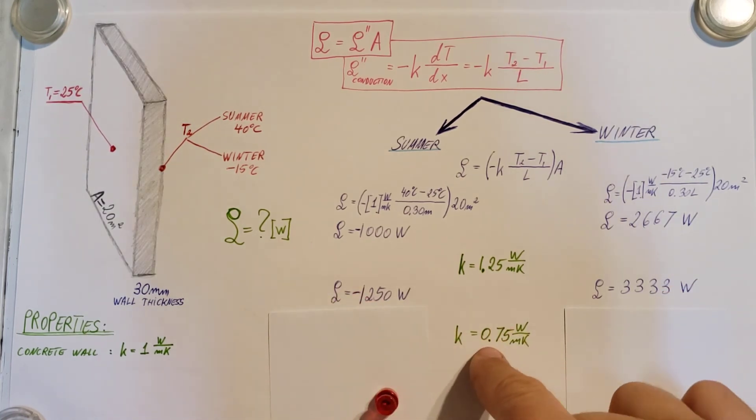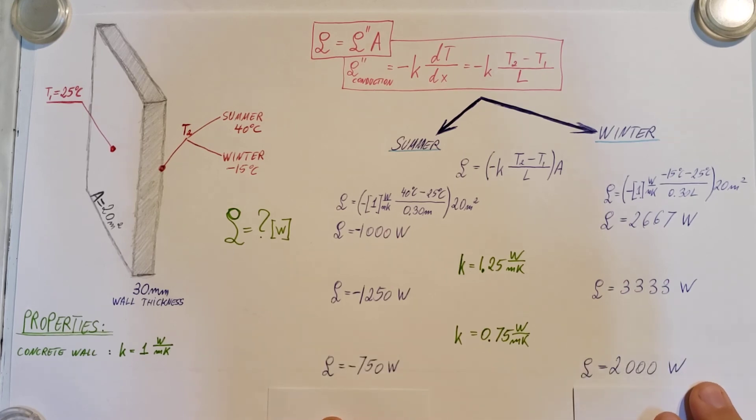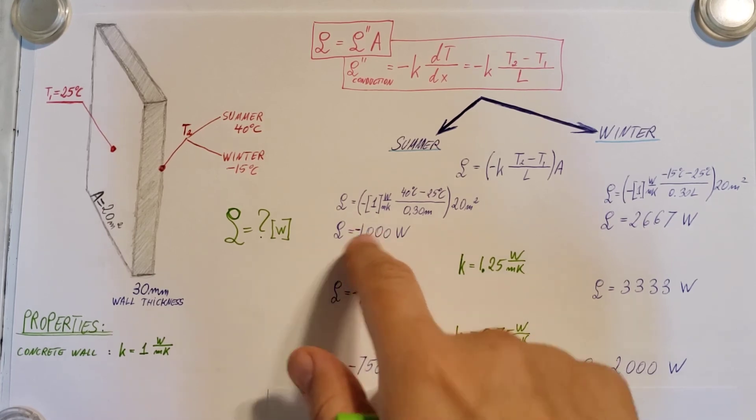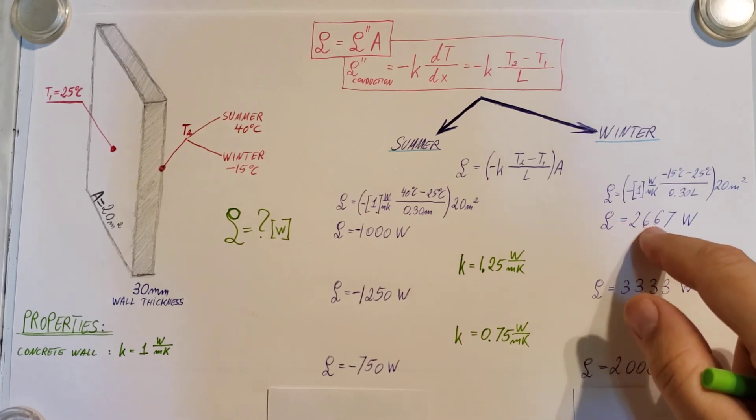Now, if our conductivity is smaller compared to the one, let's see, look at that. Our values dropped. It's prohibiting heat transfer. So the smaller this is, the less heat transfer we're going to have. So 0.75, we can see that we had a 750 watt transfer rather than a thousand. And here, only 2000 versus 2667.